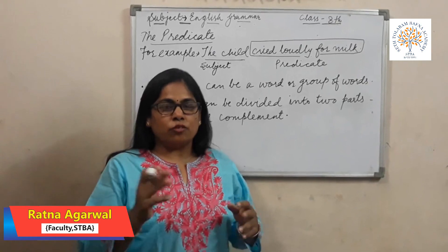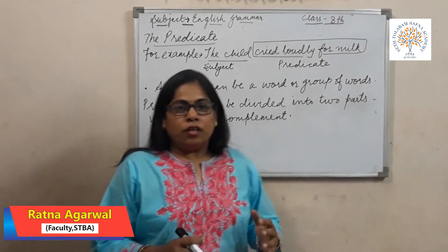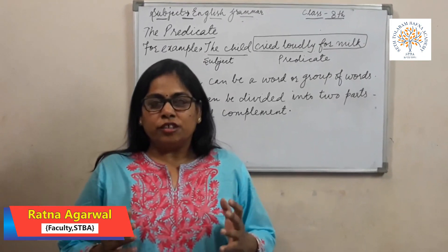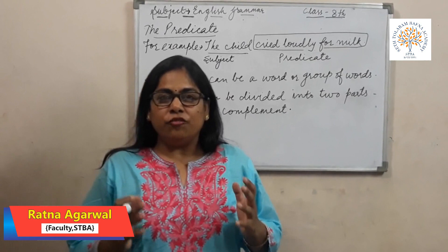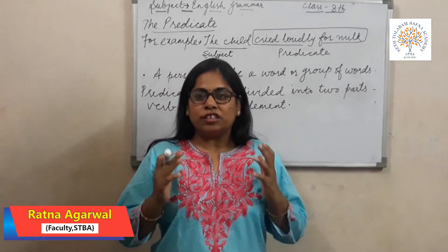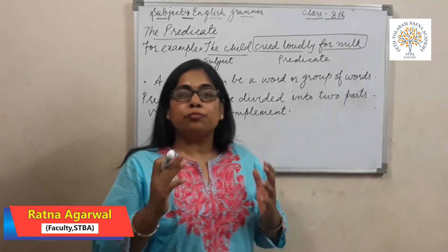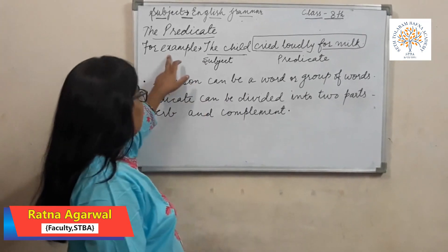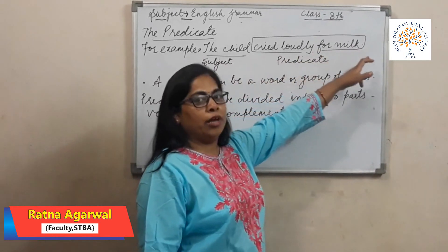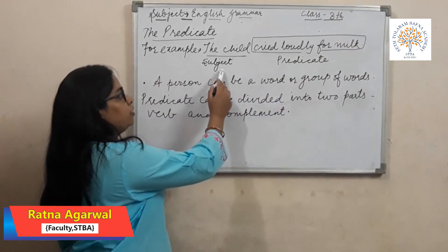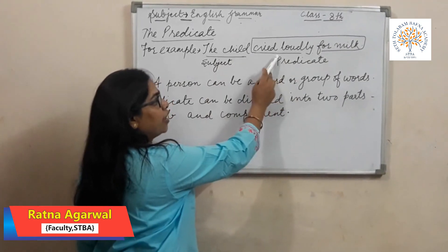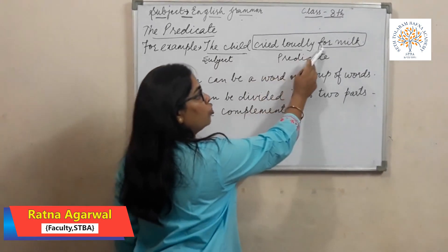Now let us know about the predicate. In a sentence, a word or a group of words which provides information or says something about the subject is called the predicate. For example, 'the child cried loudly for milk' — here, the subject is 'the child' and the predicate is 'cried loudly for milk'.